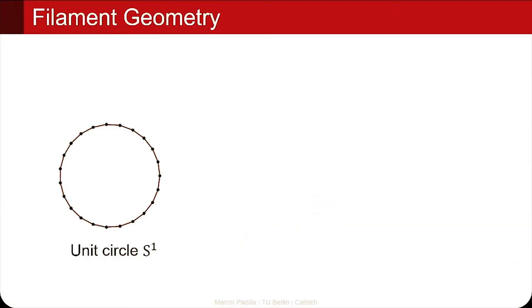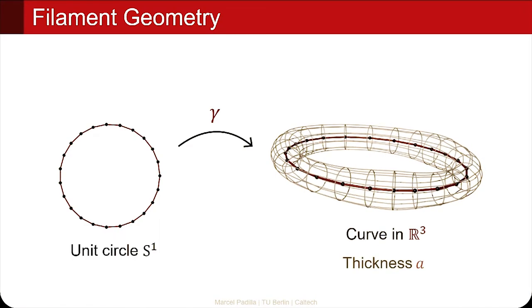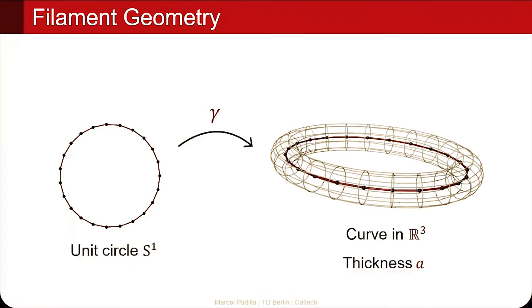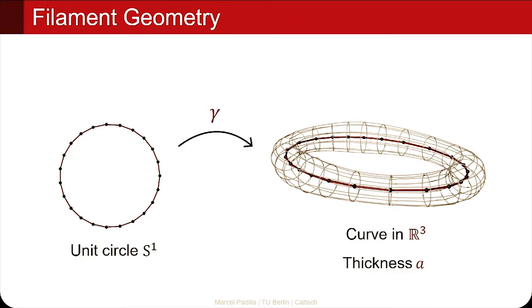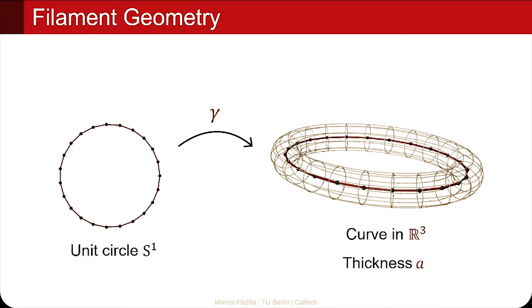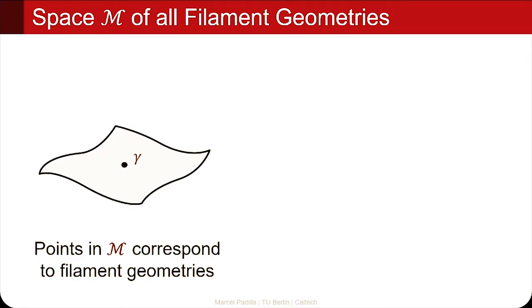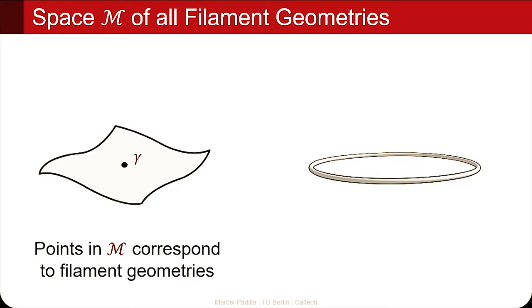Let's get started with the math. We represent our filament geometry using mappings gamma from the unit circle to 3D thick curves with annotated thickness along the curve. We imagine that the vorticity of the fluid is concentrated inside that curve. We also assume that this vortex filament is thin relative to its extent. Now we want to look at the space of all filament geometries — a space where one point represents a mapping from the unit circle to a 3D curve.